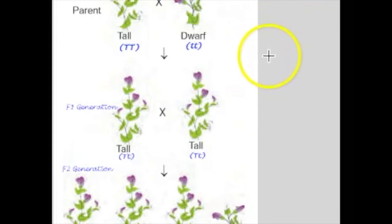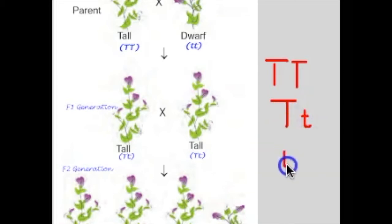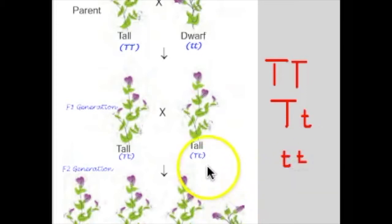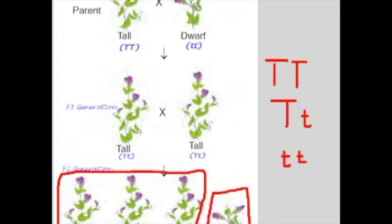For capital T and lowercase t factors, three combinations are possible: capital capital, capital lowercase, and lowercase lowercase. Capital T, capital T plants will be tall, while plants with two lowercase t's will be short. Since capital T is dominant to lowercase t, plants that have one capital T and one lowercase t will be tall because the dominant factor masks the recessive factor.